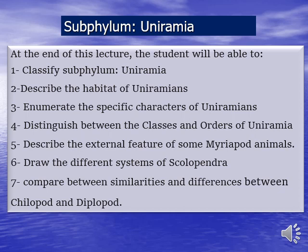At the end of this lecture you should be able to classify Subphylum Uniramia and describe its habitat, enumerate the specific characters of Uniramians, distinguish between the classes and orders of this subphylum, describe the external features of some Myriapod animals, draw the different systems of Scolopendra, and compare the similarities and differences between Chilopoda and Diplopoda.